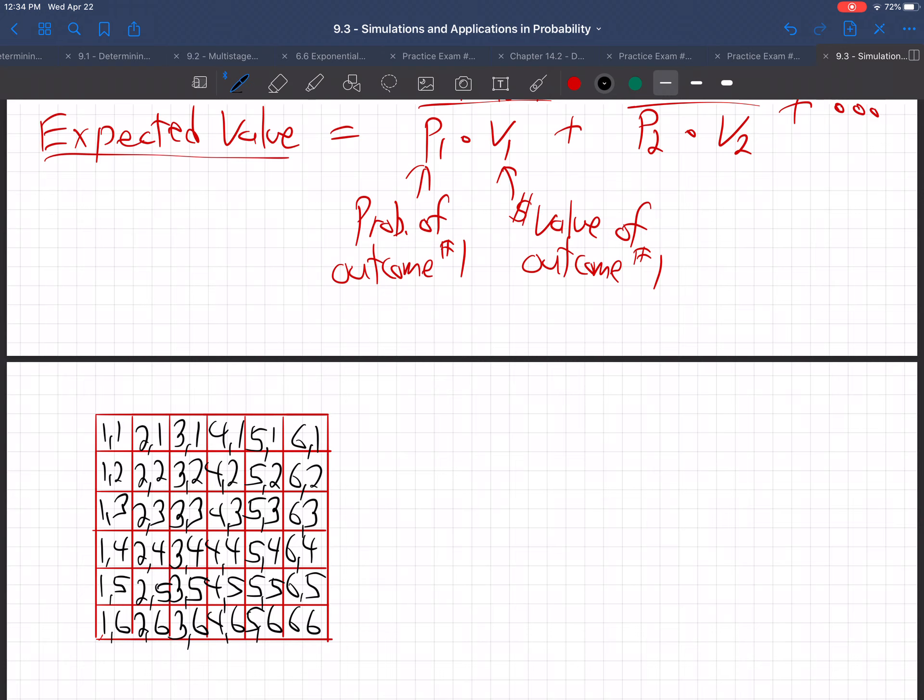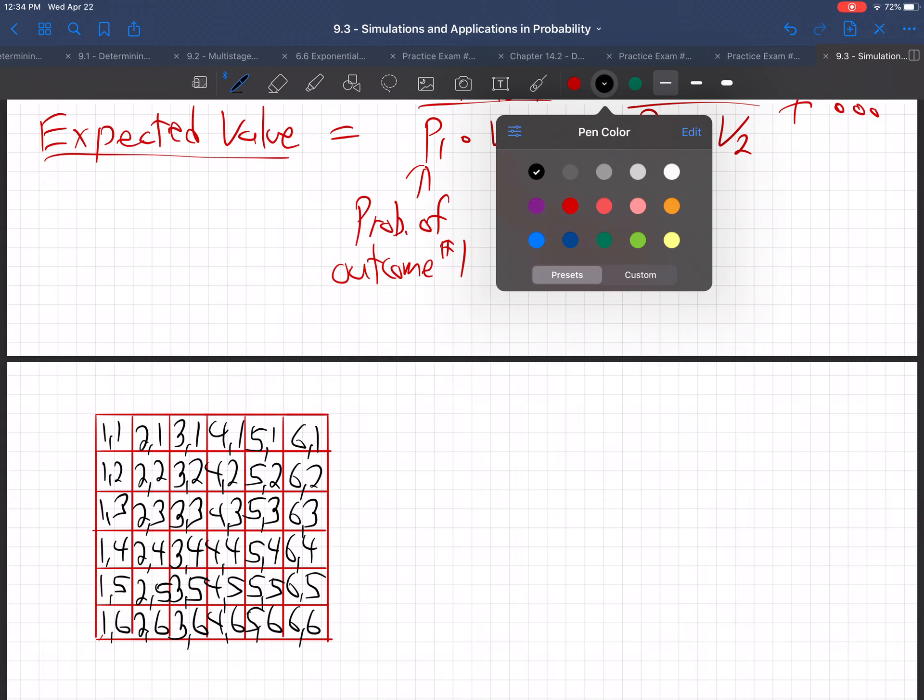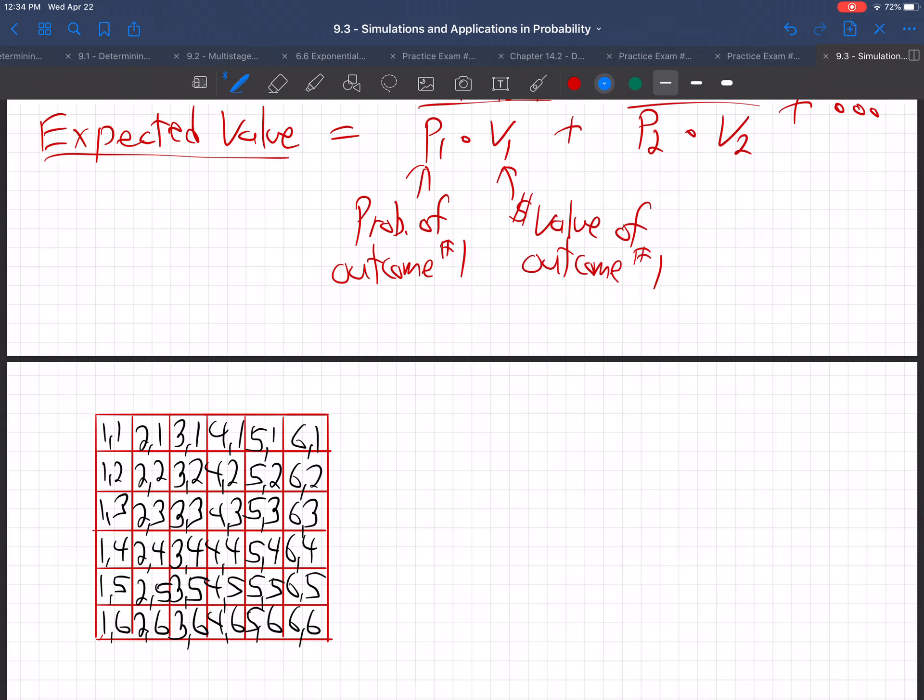Okay, so there they are. There's the 36 different things that can happen when we roll two dice. Now we have to do the sums. So remember the main diagonal right here, all the dice on this main diagonal, the sum is seven.